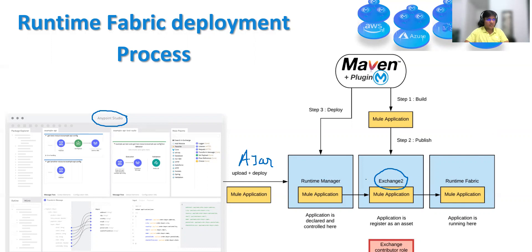In Runtime Manager, you will see the deployment history. In the Runtime Fabric section, you will see that deployment history. So let's say your current deployment creates a problem — you can immediately go back to the last working deployment and get the JAR from there. This JAR will be stored in Exchange.